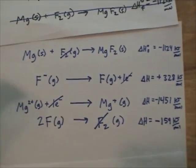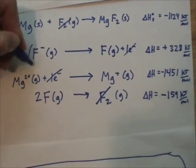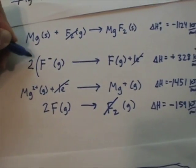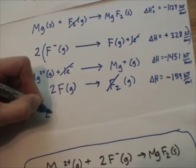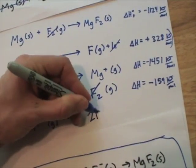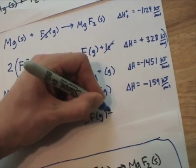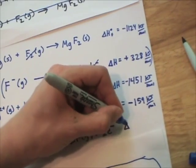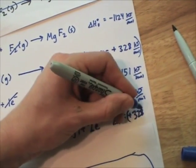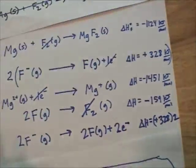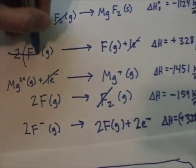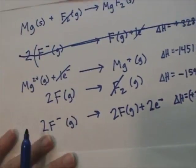So this is where Hess's law, this is all part of Hess's law, but we want to multiply this whole reaction by two. So we'll redraw it and say 2 F minus gas yields 2 F gas plus 2 electrons. And the delta H is positive 328 times 2 kilojoules per mole. And I'll just cross this out so that I remember that I have redrawn it. I'm not dealing with that equation anymore.